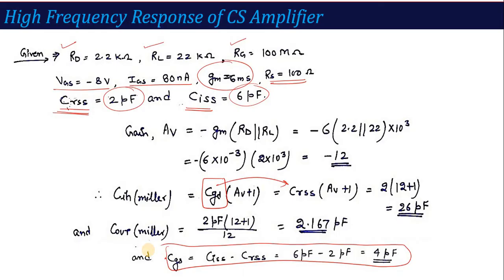This is the gain calculation: minus g_m times r_d parallel R_L. All values are available here. That is 6 millisiemens, g_m times 10 to the power minus 3, then r_d parallel R_L is solved. We got the value of voltage gain A_V.